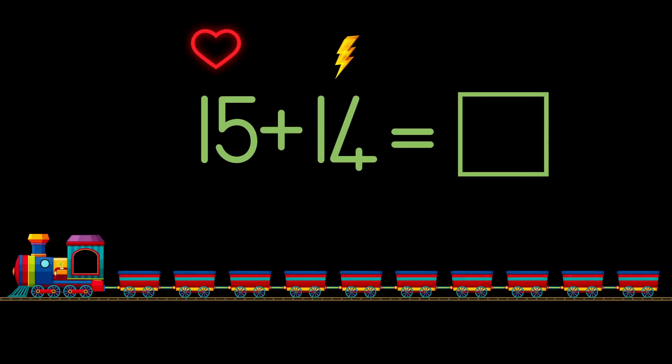We have a heart above the first number 15 to show that it is our special number which we do not break. And we have a lightning bolt above the second number 14 to show that we are going to break the second number into tens and units.